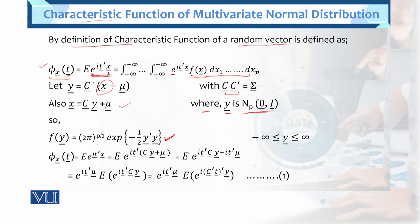So the characteristics function equals the expected value of exponential iota T prime X. Now we substitute the value of x. After simplification, we multiply exponential with mu, then multiply by iota, giving a constant term times iota. This forms equation number 1.